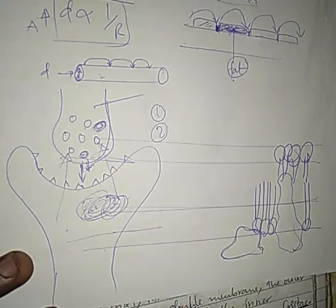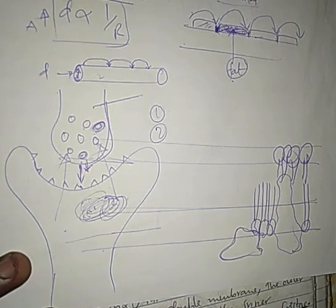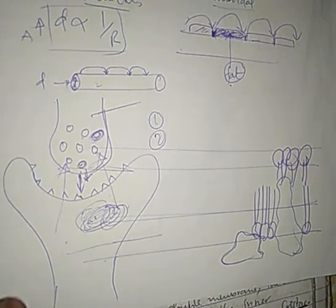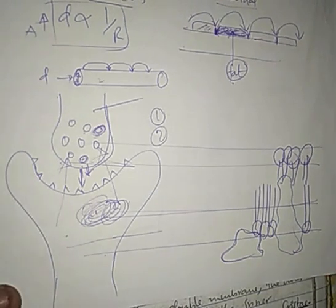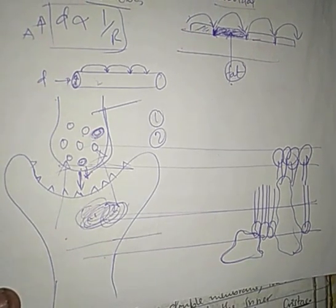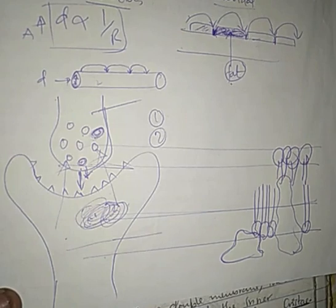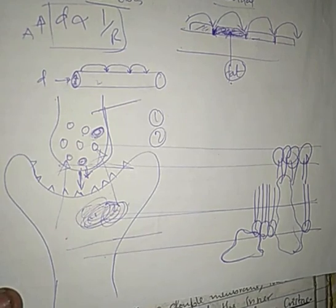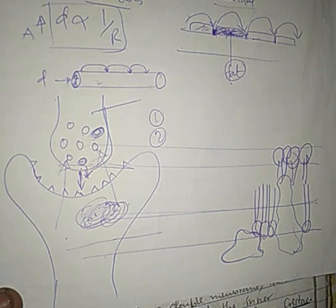The vesicles return to the presynaptic knob where they get energy from the mitochondria and fuse to reform acetylcholine for future use by the synapse. Moving on to question number 7: evaluate the importance of light and dark reaction processes of photosynthesis to life.